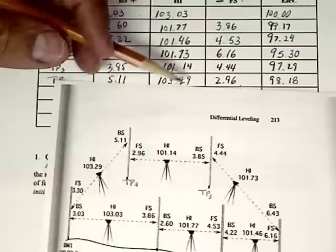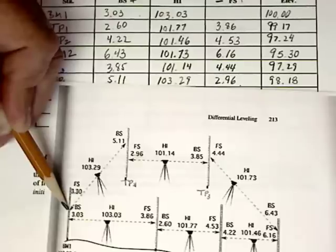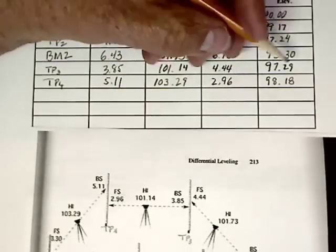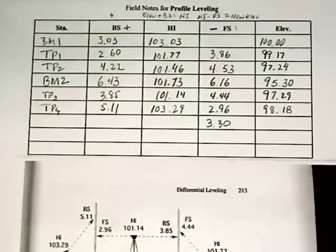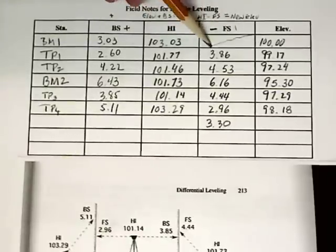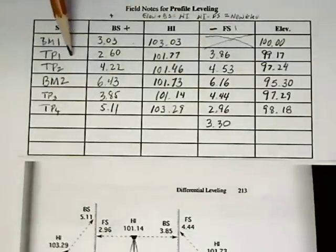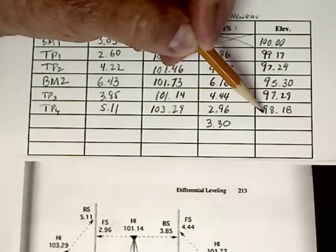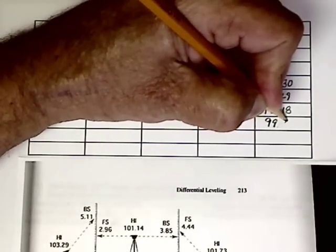We now have one final reading to make — it's back on the original benchmark. At this point it's a foresight because it's an unknown reading, and we get 3.30. It's important to notice how we always skip the foresight box in the first row, because our very first reading is a back sight. If we put a foresight there, our math will be wrong. HI minus foresight gives us our new elevation of 99.99 feet. Our survey is done.